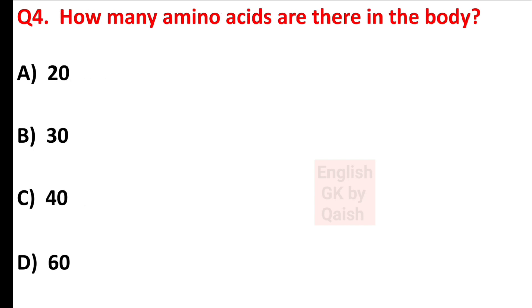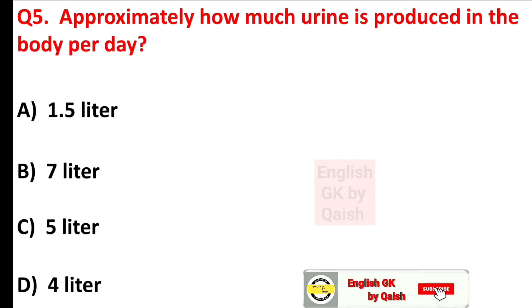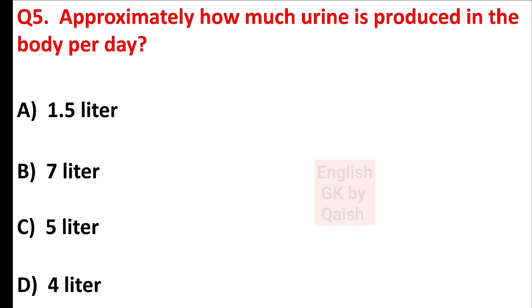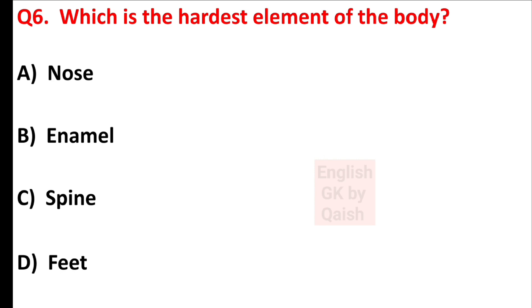How many amino acids are there in the body? Answer is option A — 20. Approximately how much urine is produced in the body per day? Answer is option A — 1.5 liters. Which is the hardest element of the body? Answer is option B — enamel.